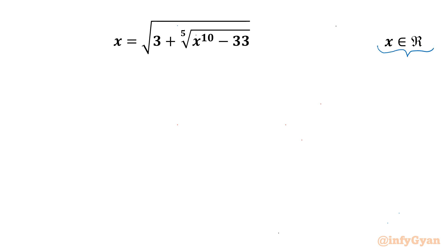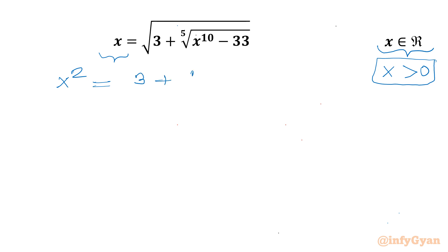Let's get started by considering one important point: the left hand side must be greater than zero. So our answer should be positive for sure for real solutions. Now squaring both sides: x squared equals 3 plus fifth root of x to the power 10. Using exponent law we can write this as the fifth root of (x squared) to the power 5, minus 33.